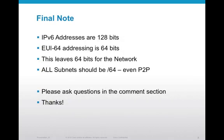A final note on EUI-64: IPv6 addresses are 128 bits long. EUI-64 addresses are 64 bits long, which leaves only 64 bits for the network. What this means is that if you choose to use EUI-64 addressing, all subnets should be at least a slash 64 — even point-to-points.